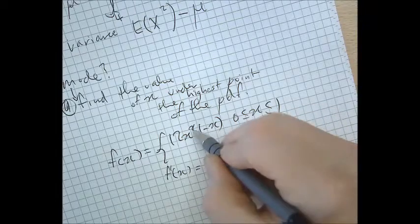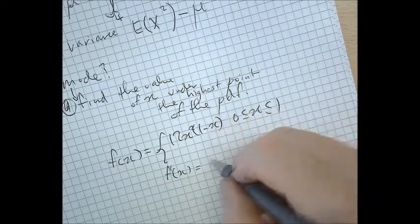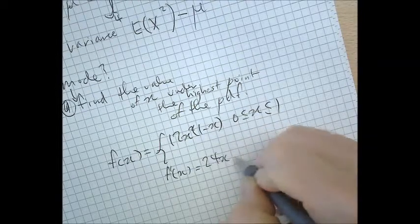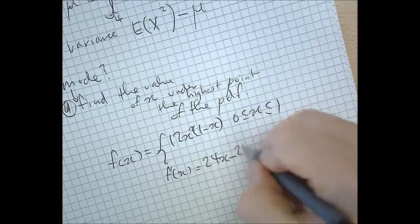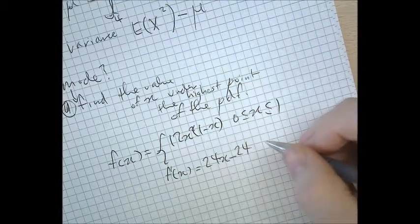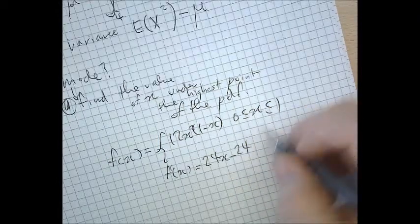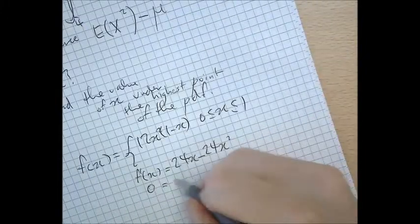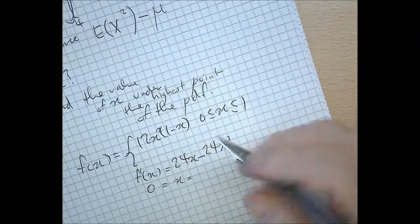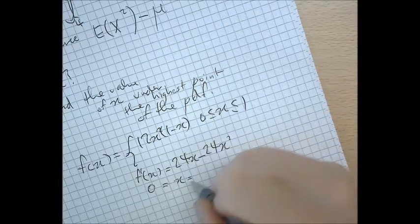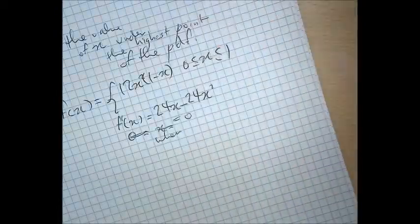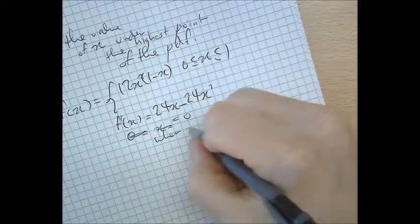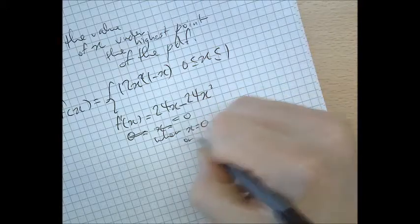Got to get it ready first. If I got it ready, it would be 24x minus 24x squared, I think. When is that equal to 0? When x equals, so that equals 0 when x equals 0 or 1.